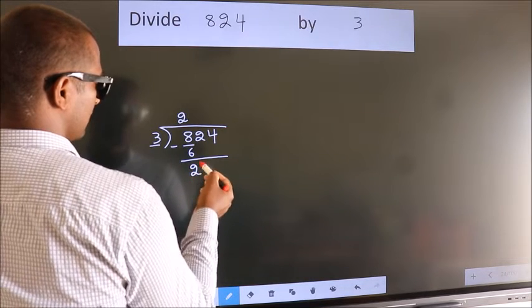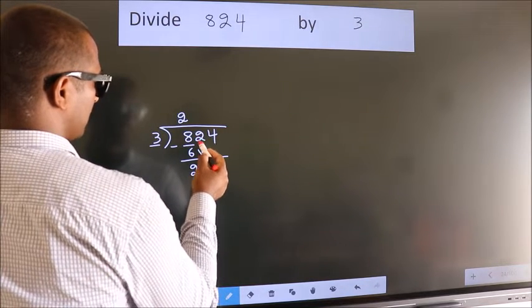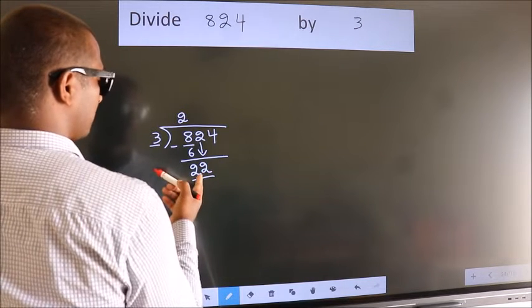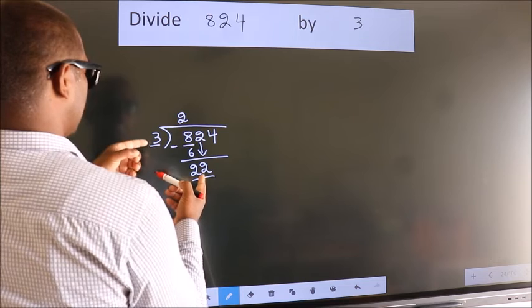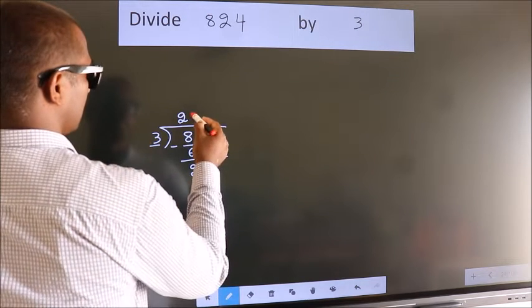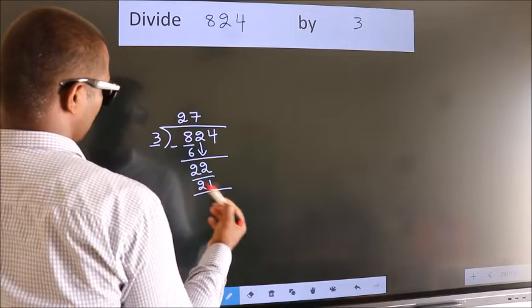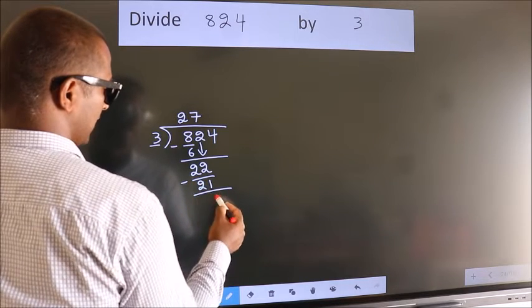After this, bring down the beside number. So bring 2 down. So 22. A number close to 22 in 3 table is 3 times 7, which is 21. Now we subtract. We get 1.